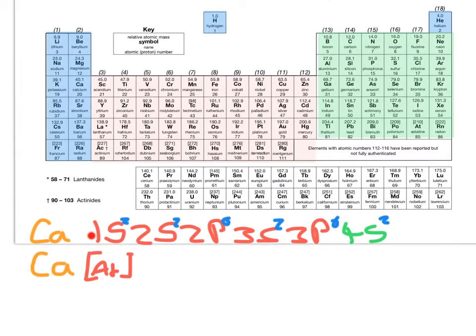So we can use all that stuff in red, 1s2, 2s2, etc., to 3p6. It can all just be replaced by argon, because that is the electronic configuration of argon. So calcium is square brackets argon, and then we can just do the 4s2. And that's the shorthand way for doing calcium using noble gas.